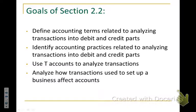We are going to look at Section 2-2 for Chapter 2 and review how transactions affect T-accounts. Our goals for Section 2-2 are to define accounting terms relating to analyzing transactions into their debit and credit parts, identifying how accounting practices relate to analyzing transactions into their debit and credit parts, and using T-accounts to analyze various transactions and see the effects they have on business accounts.